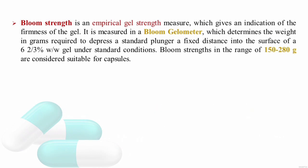Bloom strength is an empirical measure of gel strength, giving identification of the firmness of the gel. It is measured using a bloom gelometer, which determines the weight in grams required to depress a standard plunger to a fixed distance into the surface of a 6.67 percent weight-by-weight gel under standard conditions. First a 6.67 percent weight-by-weight gelatin solution is prepared, then the plunger is depressed and the weight required is the bloom strength. A bloom strength in the range of 150 to 280 grams is considered suitable for capsules.